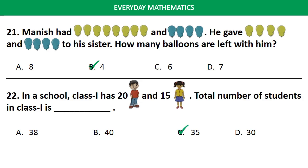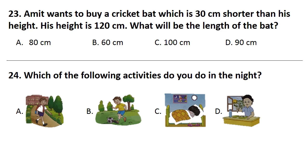Next question Amit wants to buy a cricket bat which is 30 cm shorter than his height. His height is 120 cm. What will be the length of the bat? Answer is Option D. 90 cm.